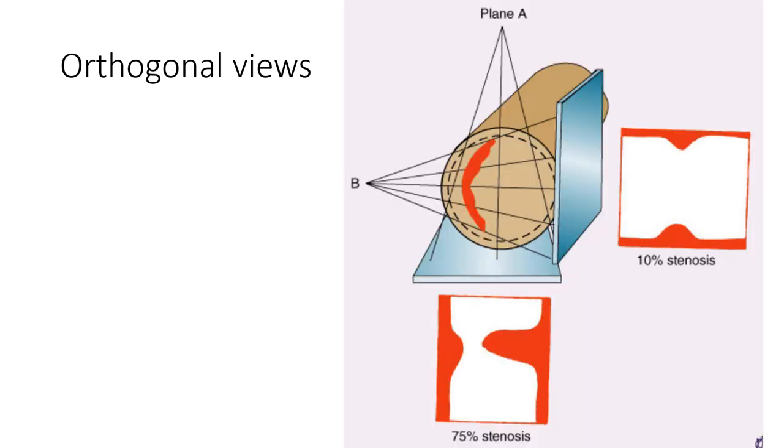Orthogonal views are important and it's important to have multiple views and projections to assess coronaries. This is because coronary angio shows the silhouette of the arteries and we have to reconstruct the image in a 3D image in our mind. So if you have an eccentric lesion, like shown here in this diagram, then in one projection like in B, it shows only a 10% stenosis, while an orthogonal projection shows the real significance of the lesion. As shown in plane A, the 10% stenosis changed into 75% stenosis.